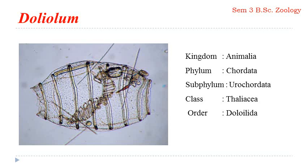Doliolum comes under Kingdom Animalia, Phylum Chordata, Subphylum Urochordata, Class Thaliacea. Order is Doliolida, also referred to as Cyclomyaria by some scientists. As the name suggests, 'cyclo' means circle and 'myaria' — M-Y-A — represents muscle. So it refers to organisms bearing encircling muscle bands. You can very clearly see the Cyclomyaria, the encircling muscle bands, in the Doliolum figure.